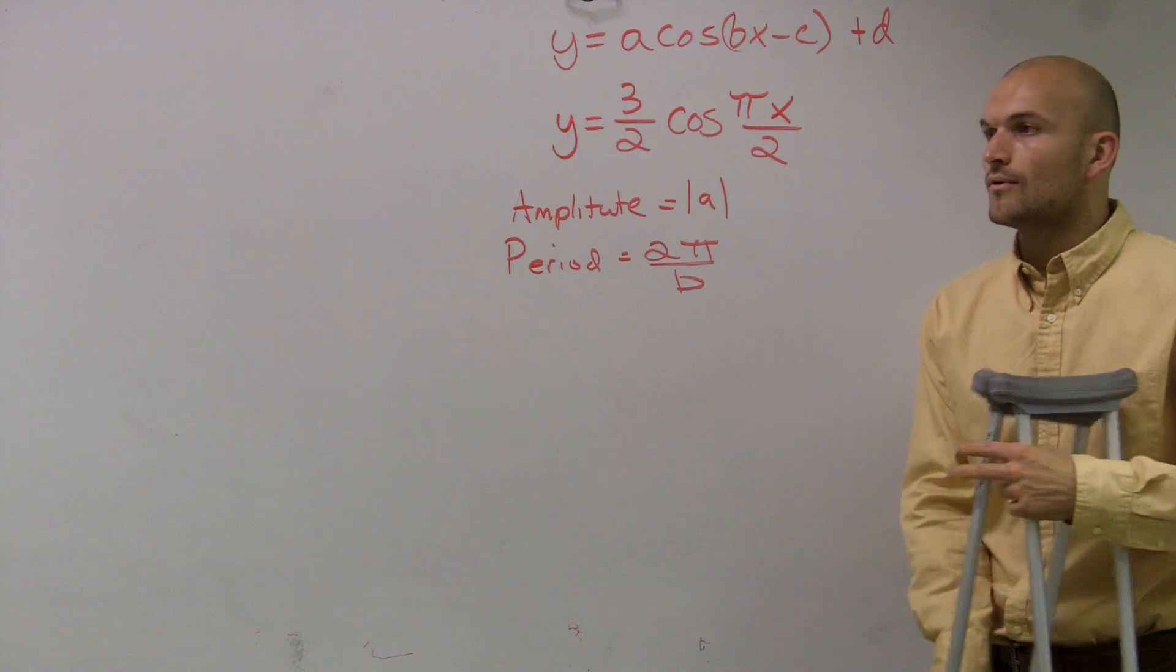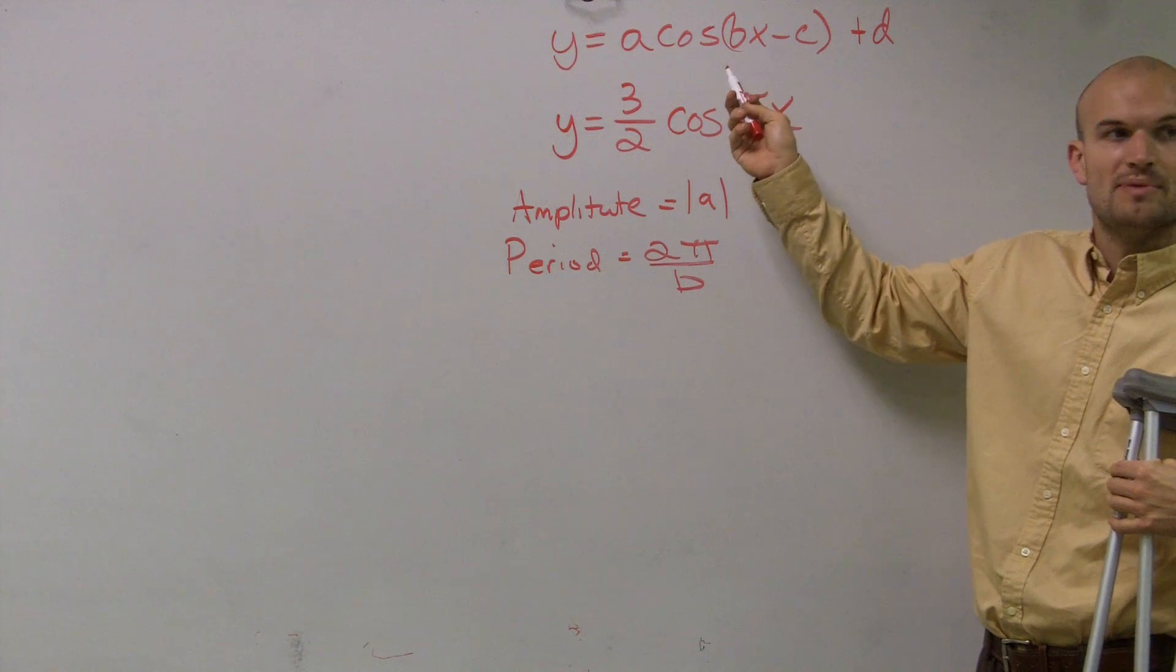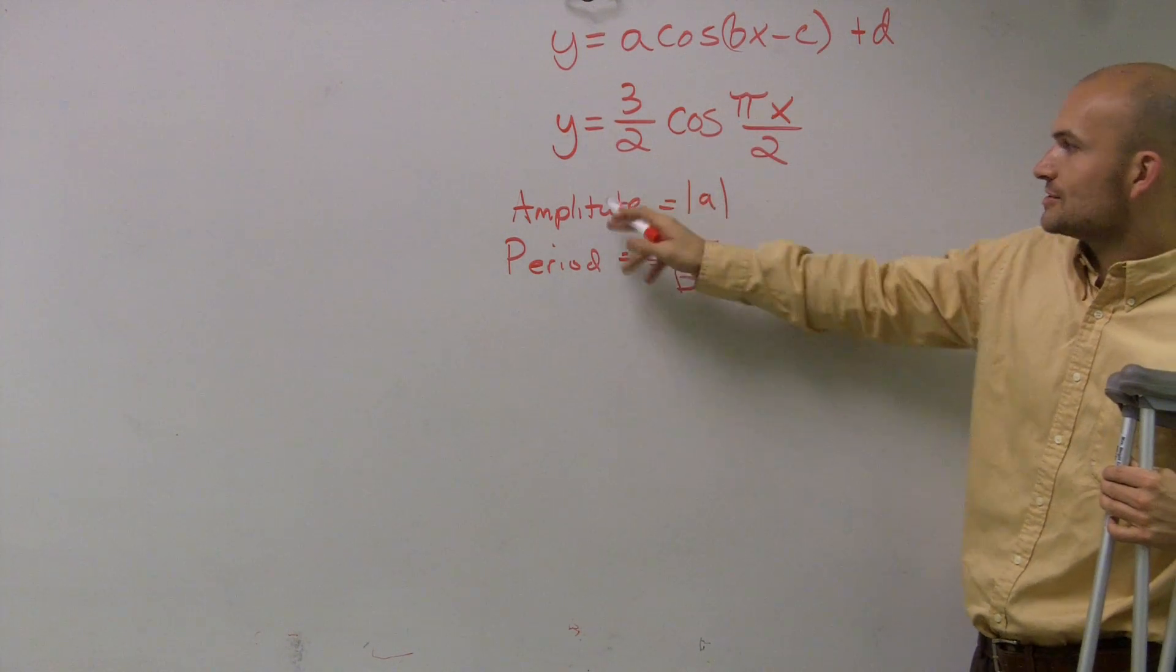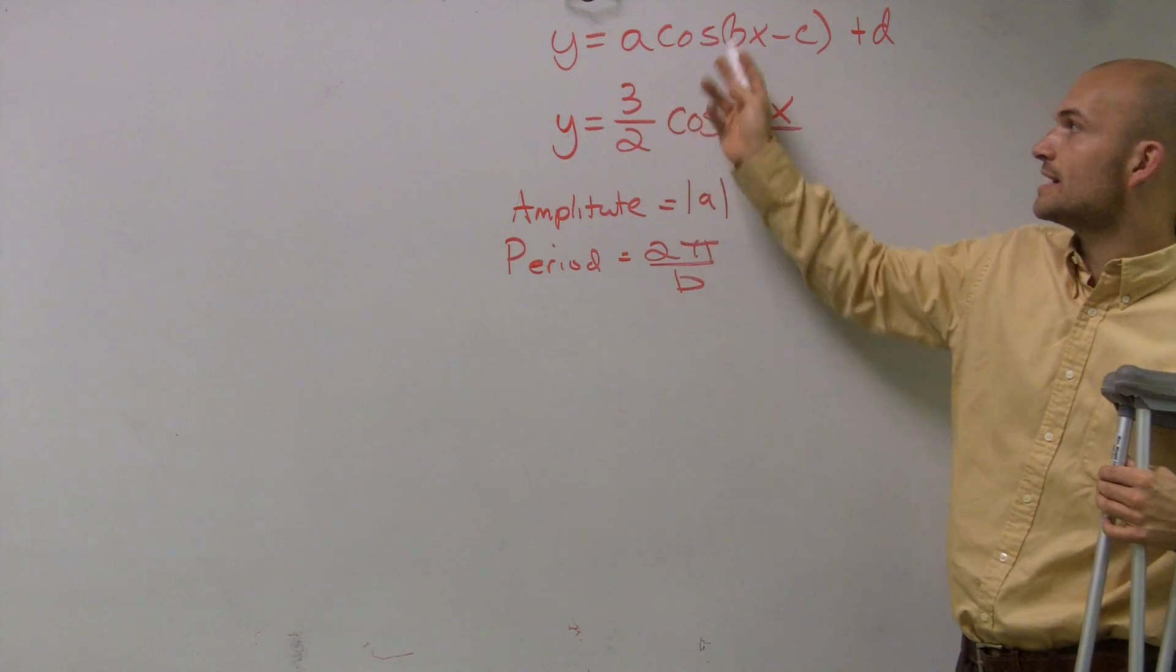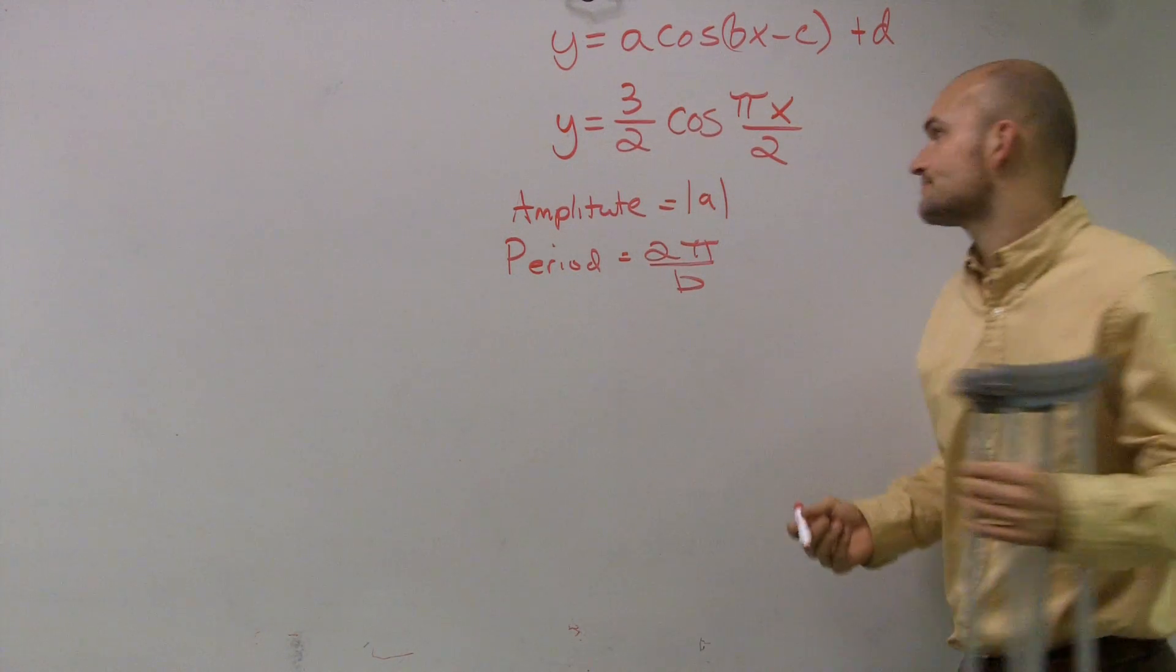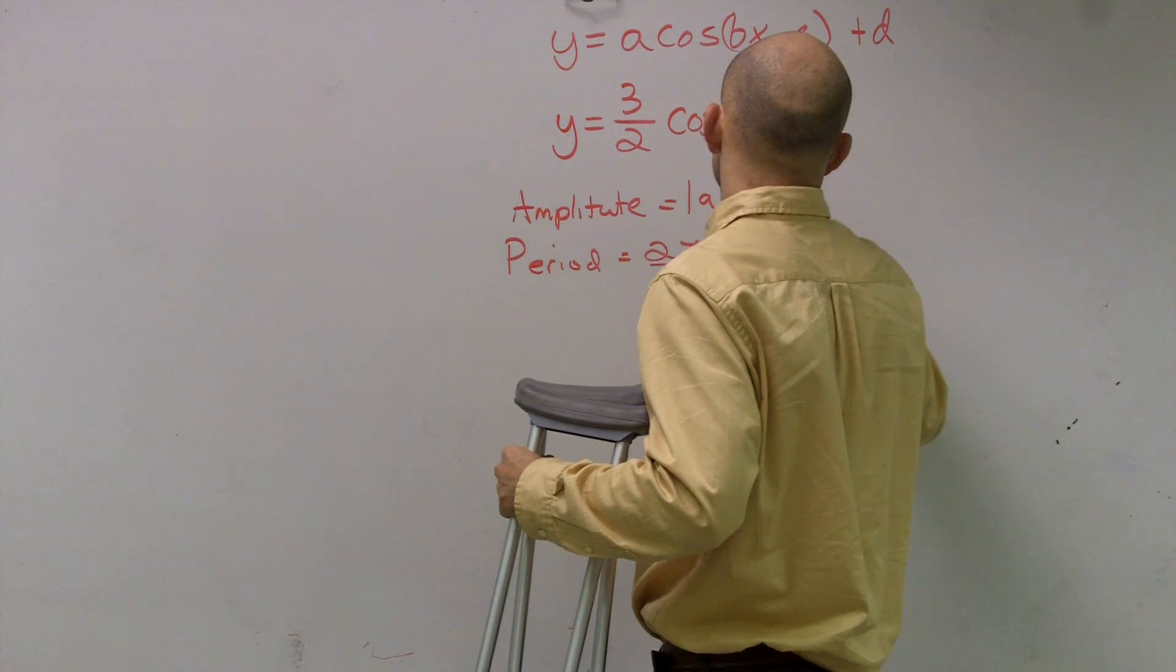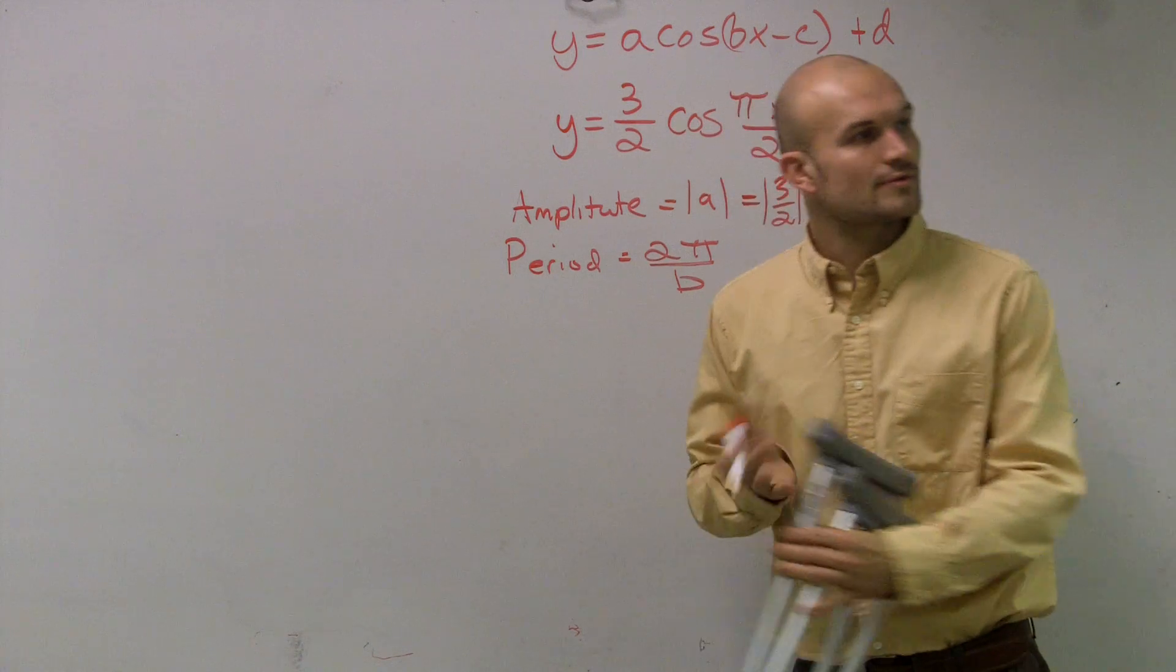Okay, so now all I'm going to do is determine what is my value of B that is in front of my x. Well, actually, let's figure out A first. So A, I look at what is the number in front of cosine. Well, that's 3/2, right? So the absolute value of positive 3/2 is obviously 3/2.